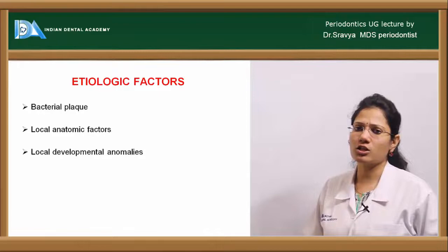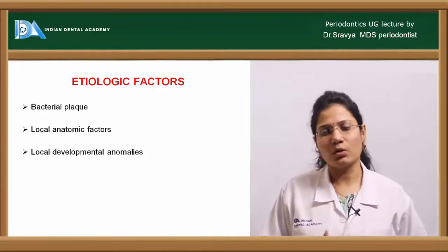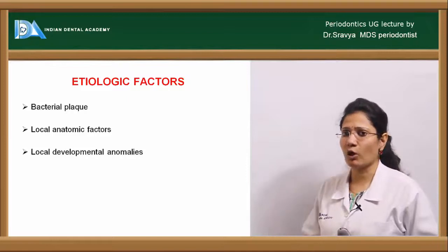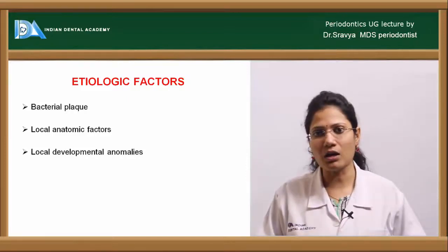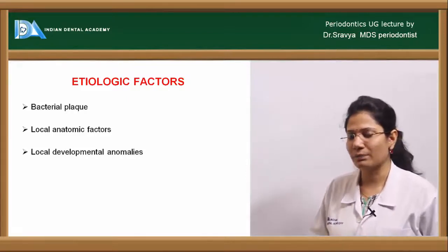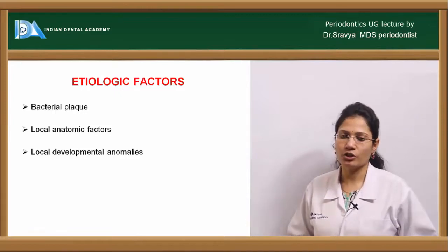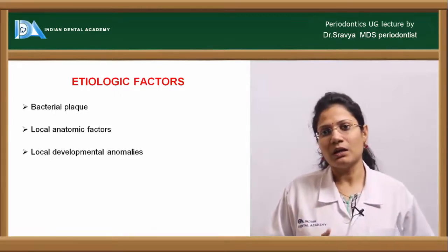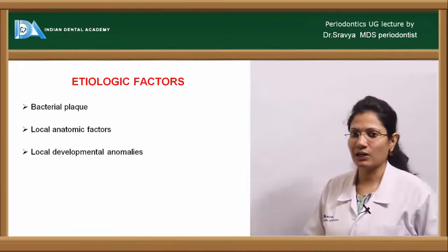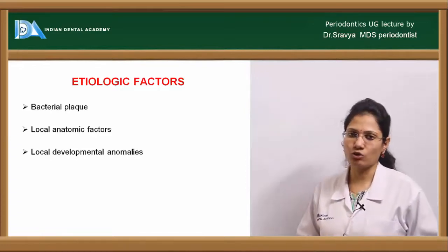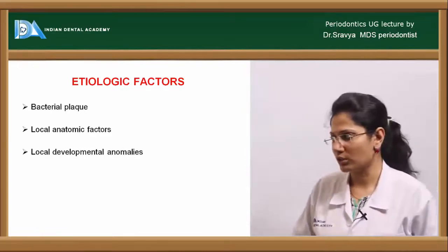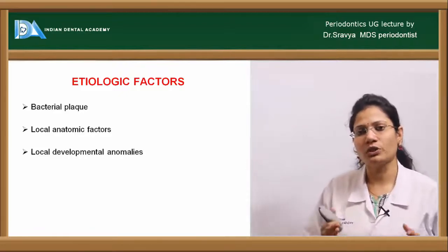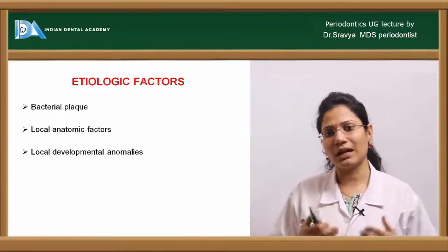The etiological factors associated with furcation involvement include bacterial plaque as the major factor. Plaque accumulated over time makes the furcation area difficult to maintain oral hygiene, thereby leading to periodontal attachment and bone loss.